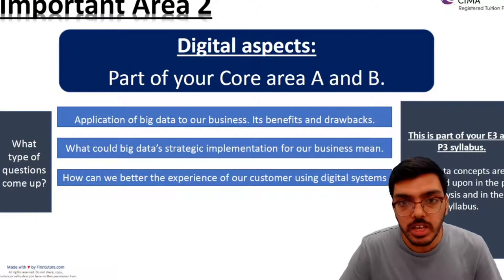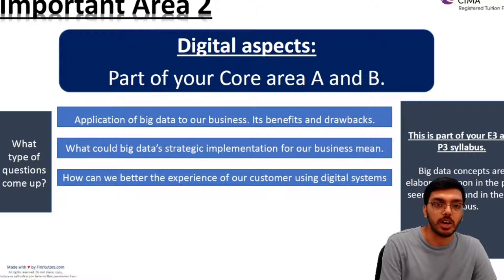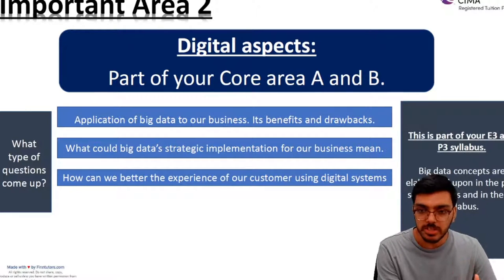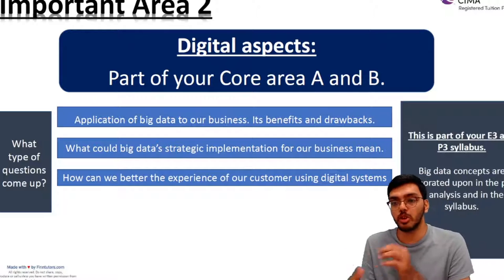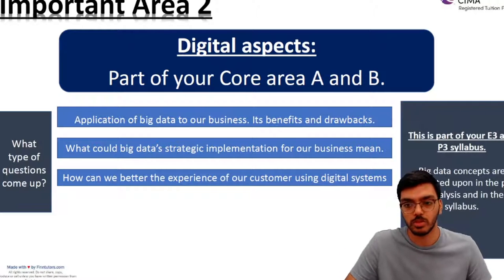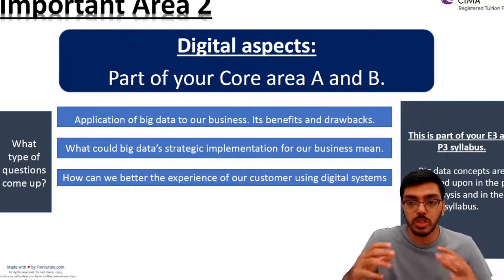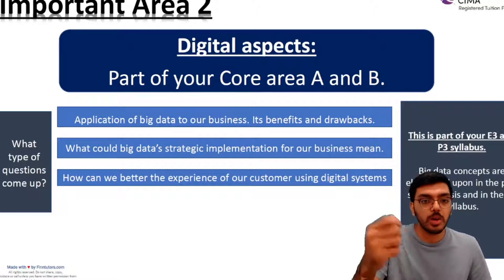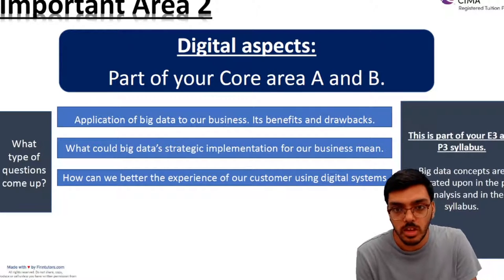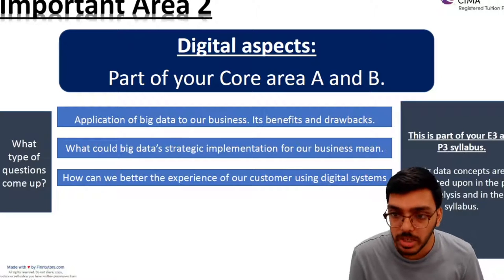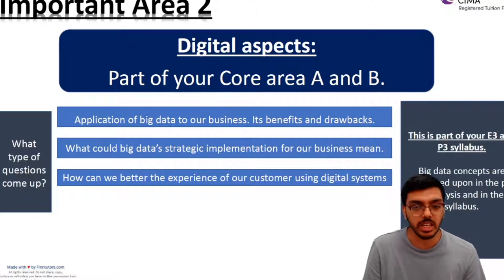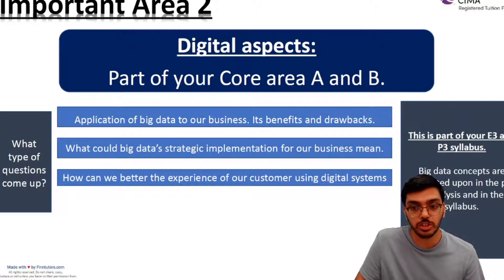Topic two is the digital aspects in a business, part A and B of your core areas. Business-oriented questions here include the application of big data to your company, the benefits and drawbacks of big data, what big data strategic implementation would mean for the business, how the business model would change, and how to better the customer experience using digital systems. Big data is also covered in the pre-seen analysis and is part of your E3 syllabus, which you must revise.